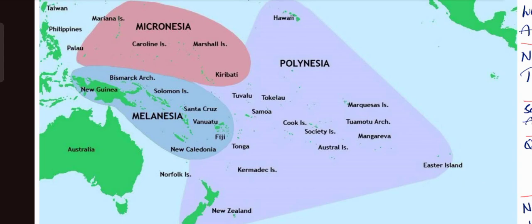In the middle, going from the western side to the eastern side, there are three islands: Tuvalu Island, Tokelau Island, and Samoa Island. After that, at the center of Polynesia, there are three more islands: Cook Islands, Society Islands, and Austral Islands. Further to the eastern side, there are three more: Marquesas Islands, Tuamotu Archipelago, and Mangareva Island.